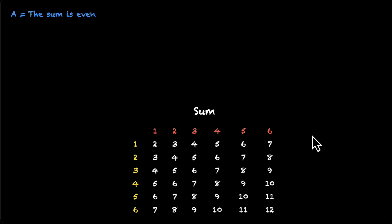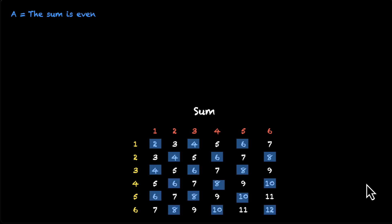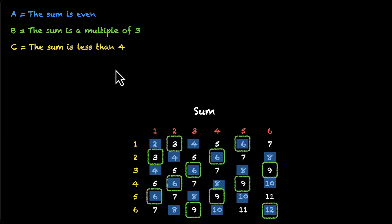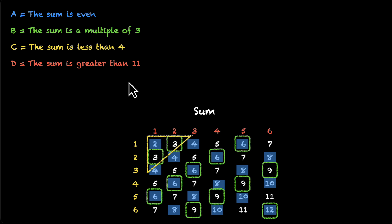For event A, the sum is even, so every other number in the grid is part of event A. For event B, the sum is a multiple of 3, so the numbers 3, 6, 9, and 12 are part of event B. For event C, the sum is less than 4, so it can be 2 or 3 — this forms a small triangle in the top left. For event D, the sum is greater than 11; there is only one number greater than 11, which is 12, so event D has only one sample point — when both dice show 6.